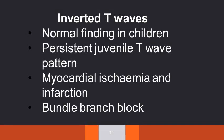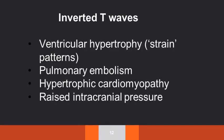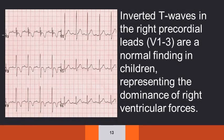Inverted T waves are normally seen in children, and other causes are persistent juvenile T wave pattern, myocardial ischemia and infarction, bundle branch block, ventricular hypertrophy, pulmonary embolism, hypertrophic cardiomyopathy, and raised intracranial pressure. Inverted T waves in the right precordial leads are a normal finding in children and it represents the dominance of right ventricular forces.